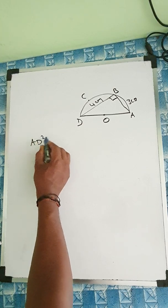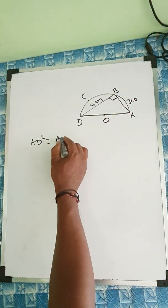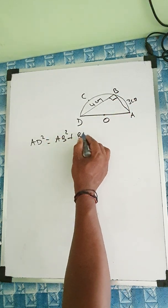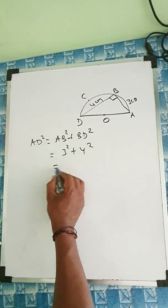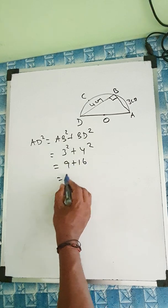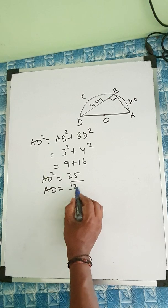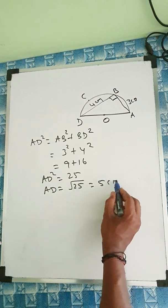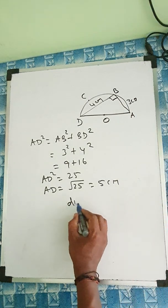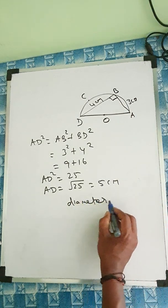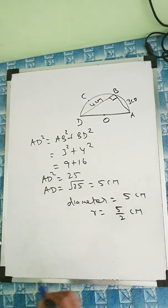AD square equal to AB square plus BD square. AB is 3 square and BD is 4 square. 9 plus 16, it's 25. AD square is 25. AD equal to root 25, value is 5 centimeter. AD is 5. AD will be the diameter. Therefore, we can say diameter 5 centimeter. That means radius is 5 by 2 centimeter.